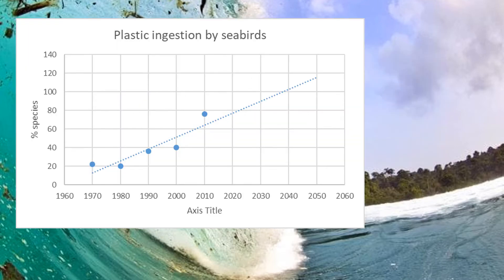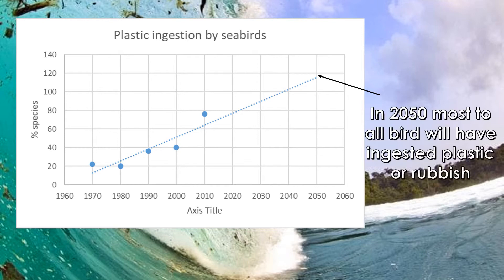In this scatter dot plot, it graphically shows the increase of birds eating plastic. From the beginning of 1960, only 22% of bird species was affected by plastic. But over the years, from 2010, that figure has gone to 78%. When it reaches 2050, the bird species will hit 100% death. The correlation is positive and has a moderate relationship.